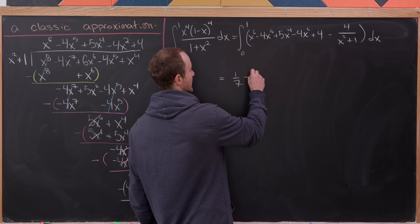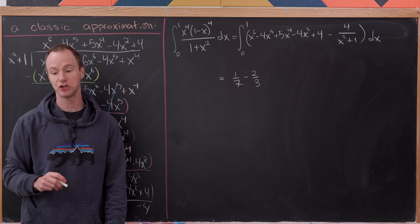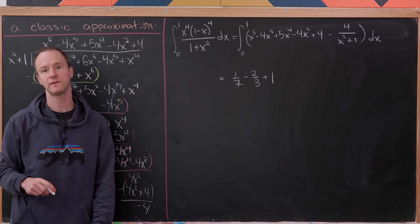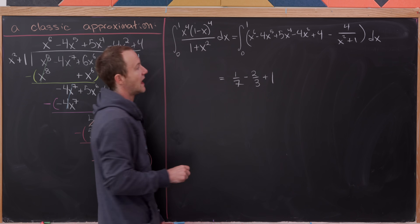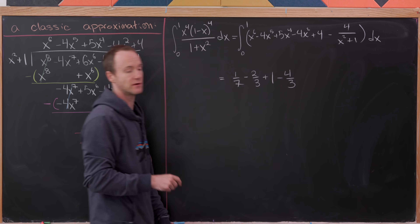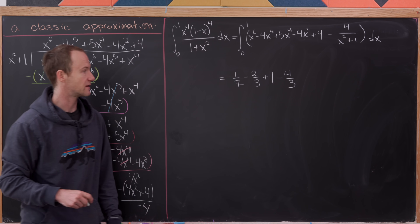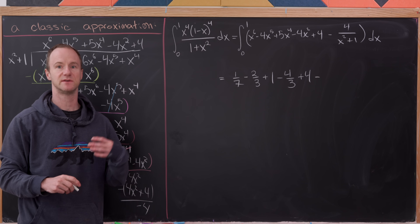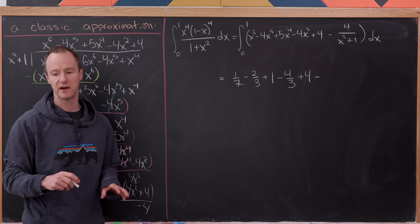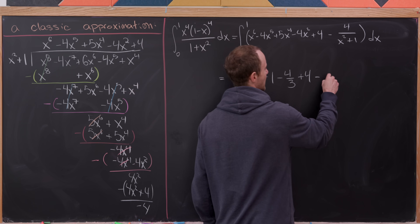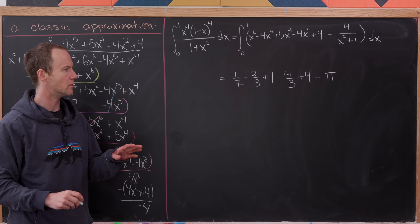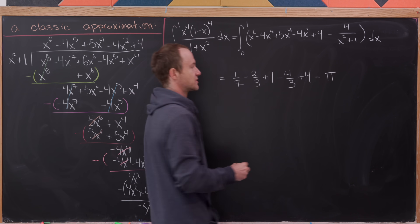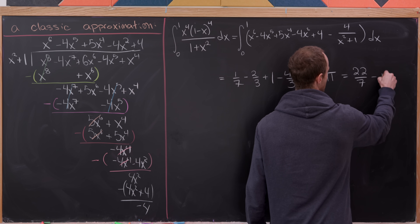Evaluating at 1: the negative 4x to the 6th over 6 term gives minus 4/6, which is minus 2/3. The antiderivative of 5x to the 4th is x to the 5th, giving plus 1. The next term gives minus 4/3. Then plus 4 from the constant term. And finally, minus 4 times the inverse tangent — since the inverse tangent evaluated at 1 is pi over 4, this gives minus pi. Combining all the rational numbers together gives us 22 over 7 minus pi.